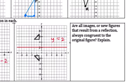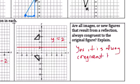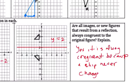Are all images, or new figures that result from a reflection, always congruent to the original figure? Yes, it is always congruent because a shape never changes with a reflection, stays the same.